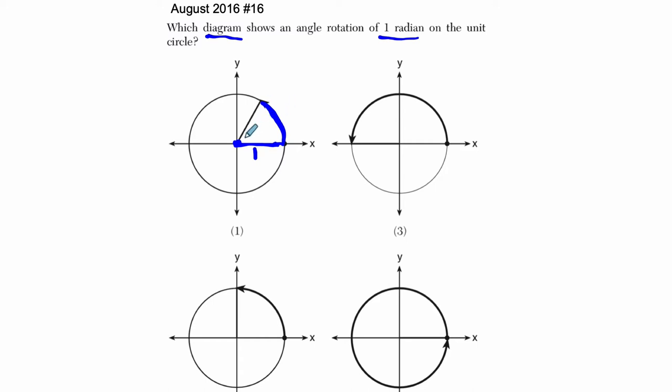So in a unit circle, we could say this angle right here, theta, measures one radian. And that's precisely one radius wrapped around the circumference.